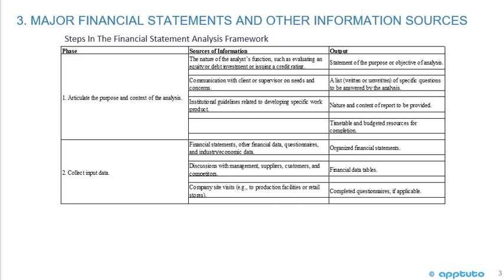For each step, we'll look at the sources of information and the output. For step one — articulate the purpose and context of the analysis — sources of information include: the nature of the analyst's function, such as evaluating an equity or debt investment or issuing a credit rating; communications with client or supervisor on needs and concerns; and institutional guidelines relating to developing specific work product. The output would be a statement of the purpose or objective of analysis, a list of specific questions to be answered, the nature and content of the report to be provided, and the timetable and budgeted resources for completion.